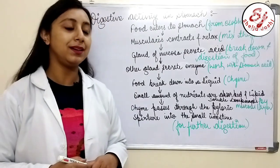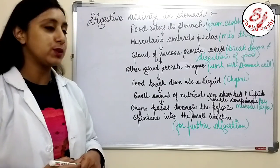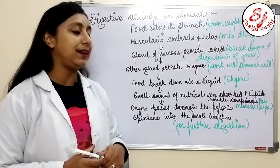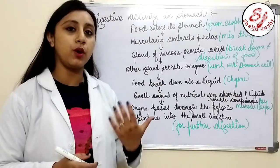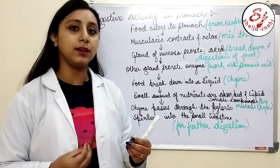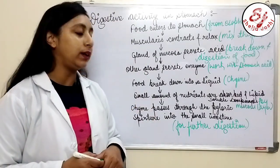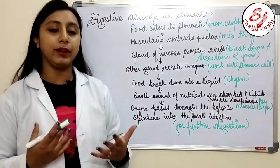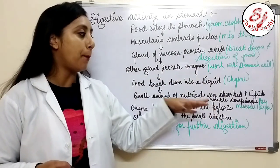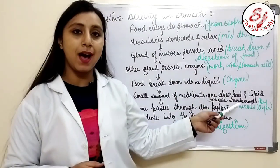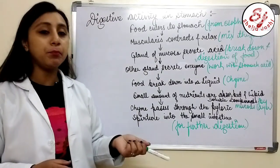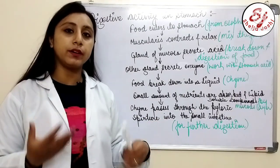In the digestion activity of the stomach, food first enters from the esophagus. The muscularis contracts and relaxes to mix the food. The glands of the mucosa secrete acid which helps break down food, and other glands secrete enzymes that work with stomach acid to break food particles. The food then converts into a liquid form known as chyme. Some small amounts of nutrients and lipid-soluble compounds — such as NSAID drugs, ethanol, steroids, and aspirin — are absorbed by the mucus layer. After that, chyme passes through the pyloric sphincter to the small intestine for further digestion.